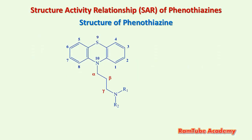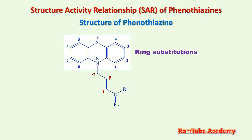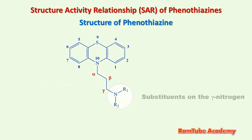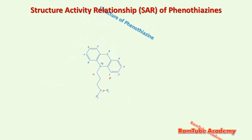Structure-activity relationship (SAR) is the study of the relationship between structural modifications and their effect on biological activity. The general structure of phenothiazine drug molecules contains three major sites for structural modifications: first, the phenothiazine ring itself; second, the alkyl side chain; and third, the gamma nitrogen.